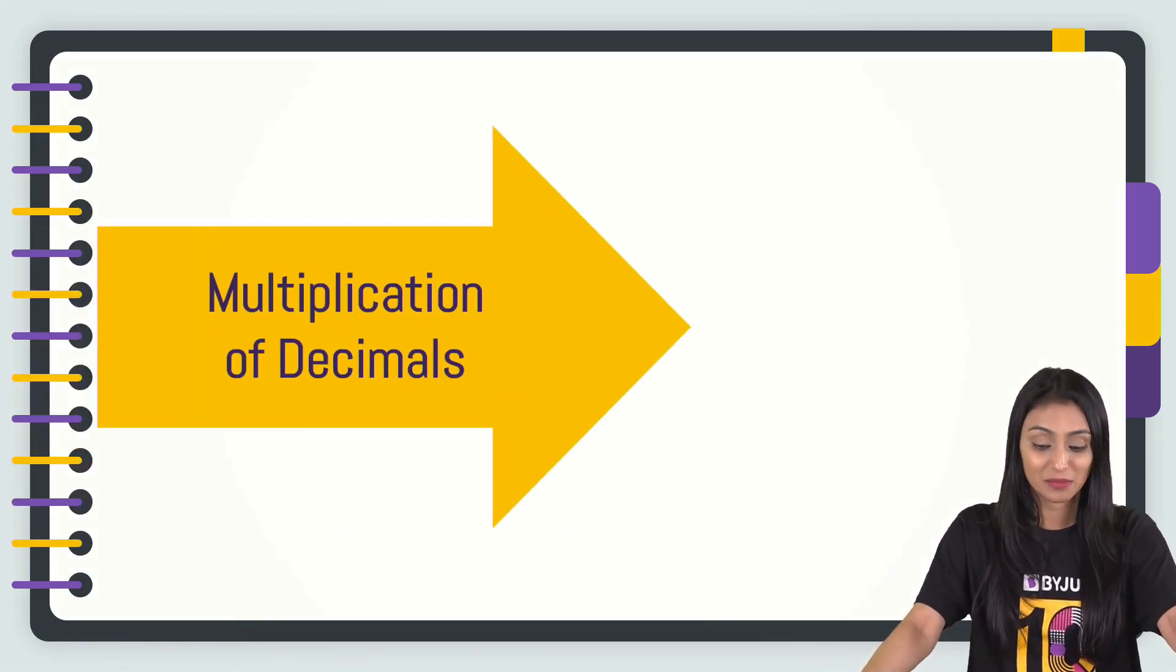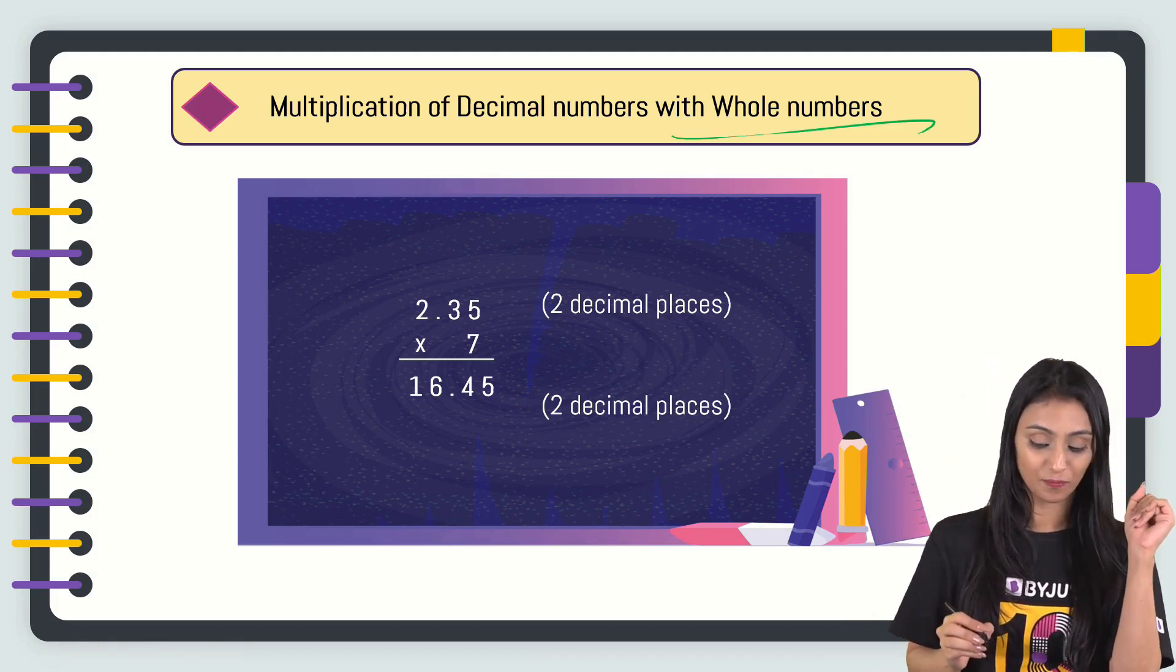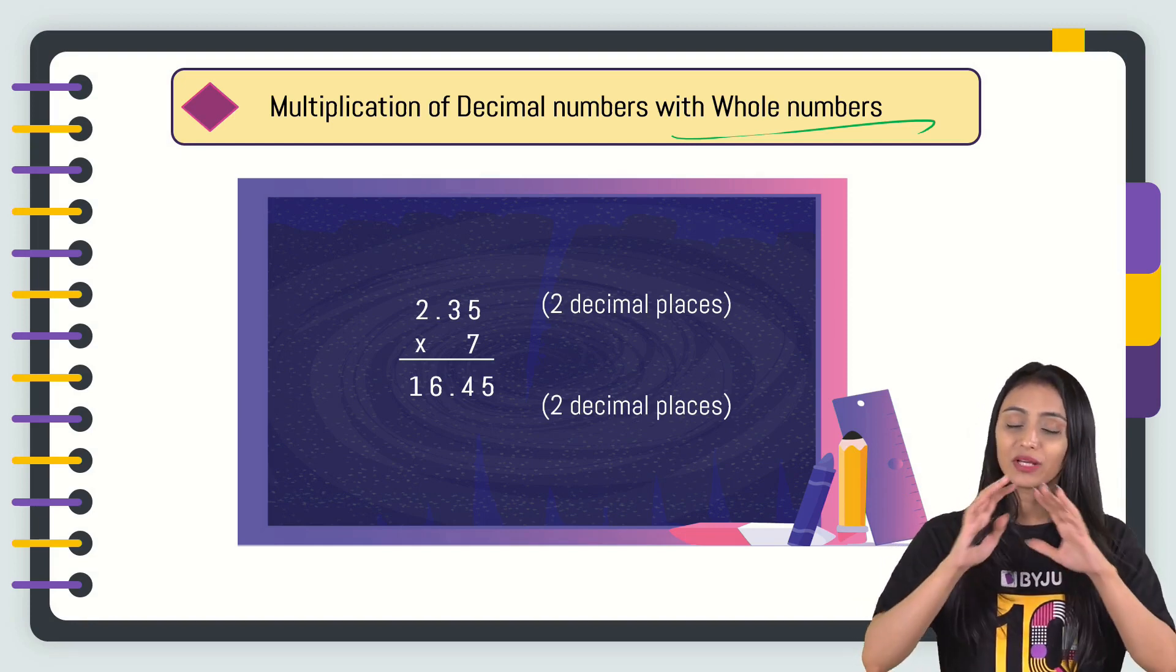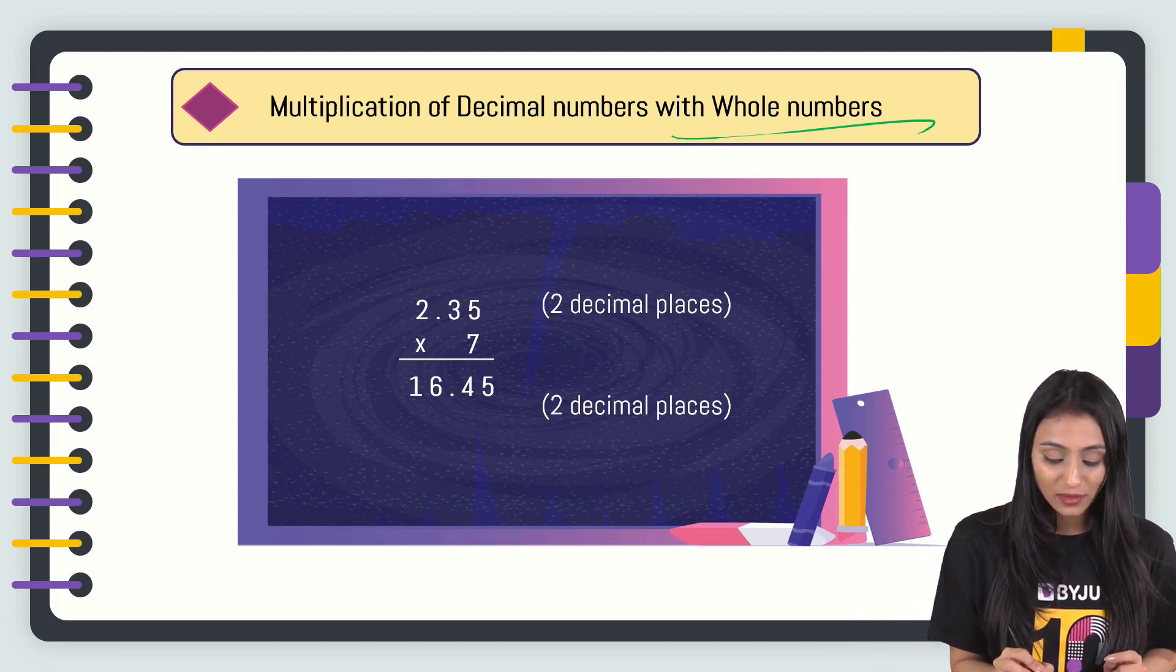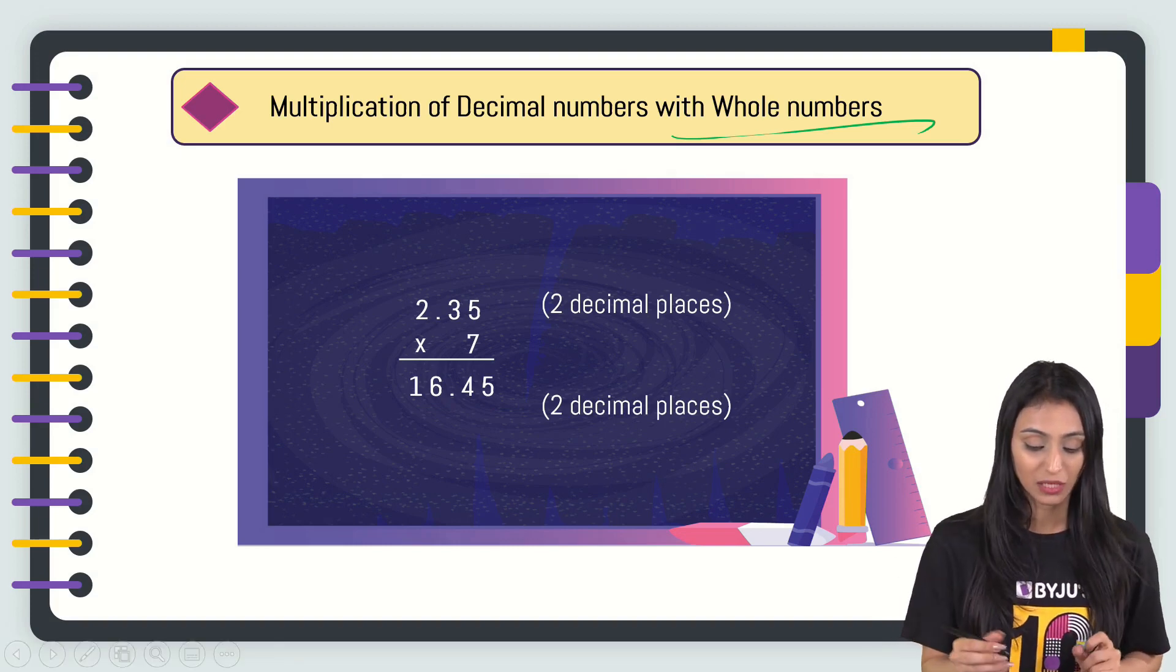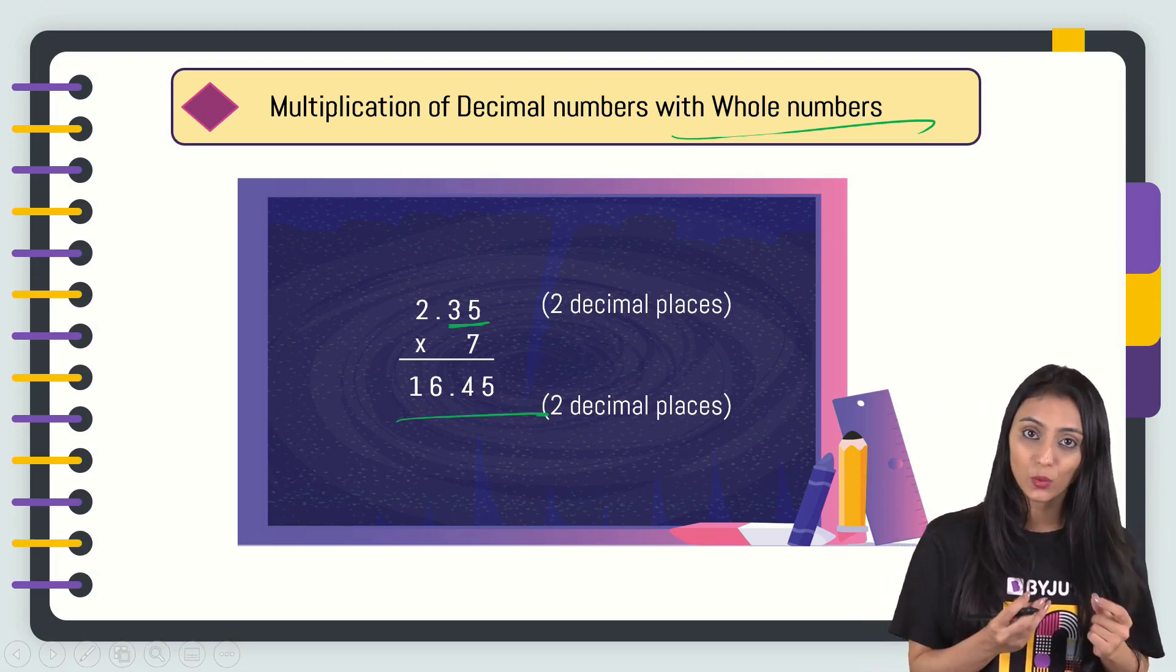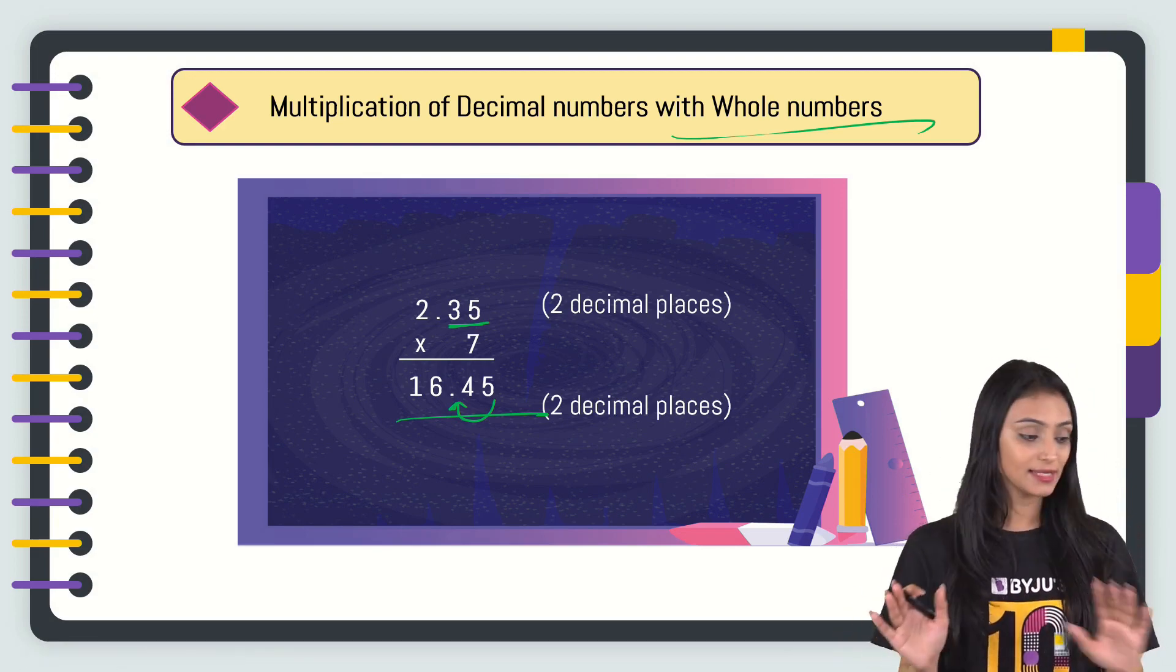Let's see how multiplication of decimals takes place. Multiplication of decimal numbers with whole numbers—we have 2.35, and we have to multiply this with the whole number 7. Forget the decimal point first. Just do normal multiplication like you normally do. You will get 1645. Now comes the important part: how to put the decimal. In this number, we have 2 digits after the decimal point. So in the answer, we will put the decimal after 2 digits starting from the right. That's going to be 16.45. It's very simple.